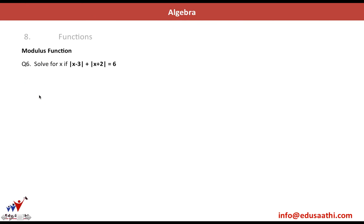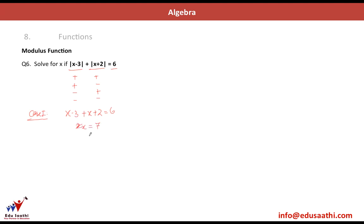Let's look at another question: solve for x if |x − 3| + |x + 2| = 6. I will make cases — each modulus expression can be positive or negative, giving four cases total.